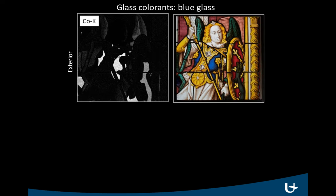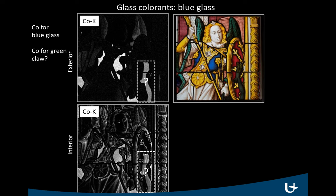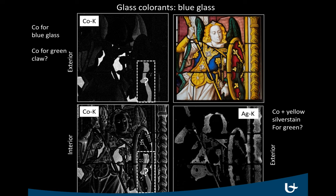The blue glass is also pot metal glass, as becomes clear from the interior and exterior maps of cobalt. Interestingly, the green claw of the dragon seems to be rich in cobalt — an element usually used for obtaining blue colors. A possible explanation could be the combination of blue glass with a yellow paint. When we look at the distribution of silver, all the yellow areas are colored by means of silver stain — however, not the claw. For the moment, the claw remains a mystery, which can only be solved by taking a sample. But even though we cannot explain it completely, the fact that we now know there is something enigmatic about the green claw is a striking result, because until now nobody noticed, in spite of it being a well-studied window. This gives an idea of the potential of macro XRF scanning for revealing new information.